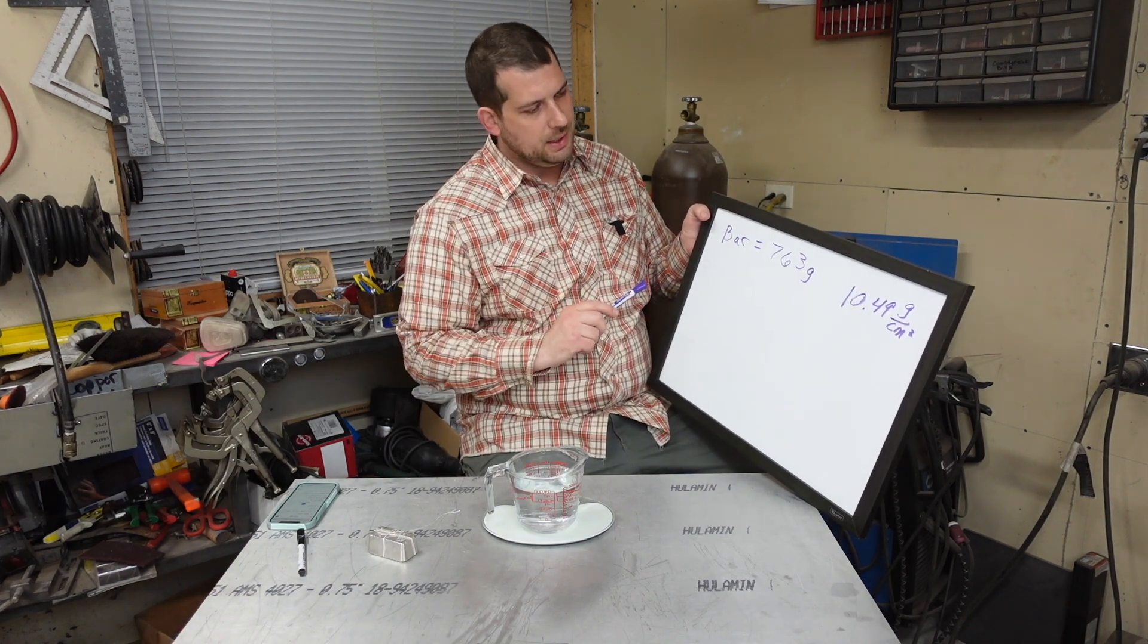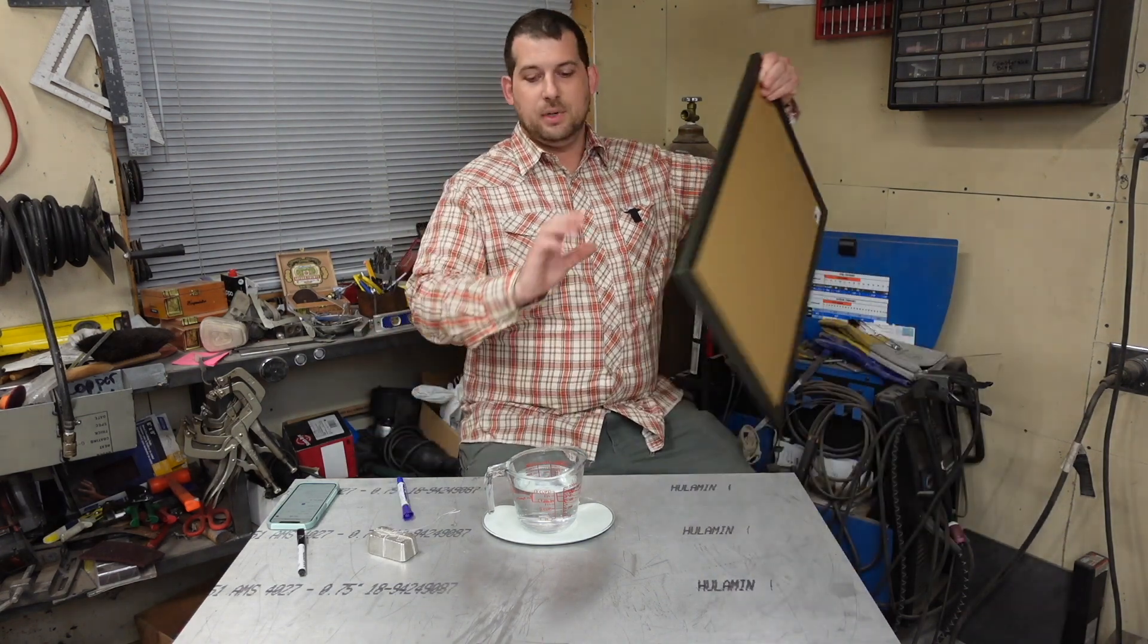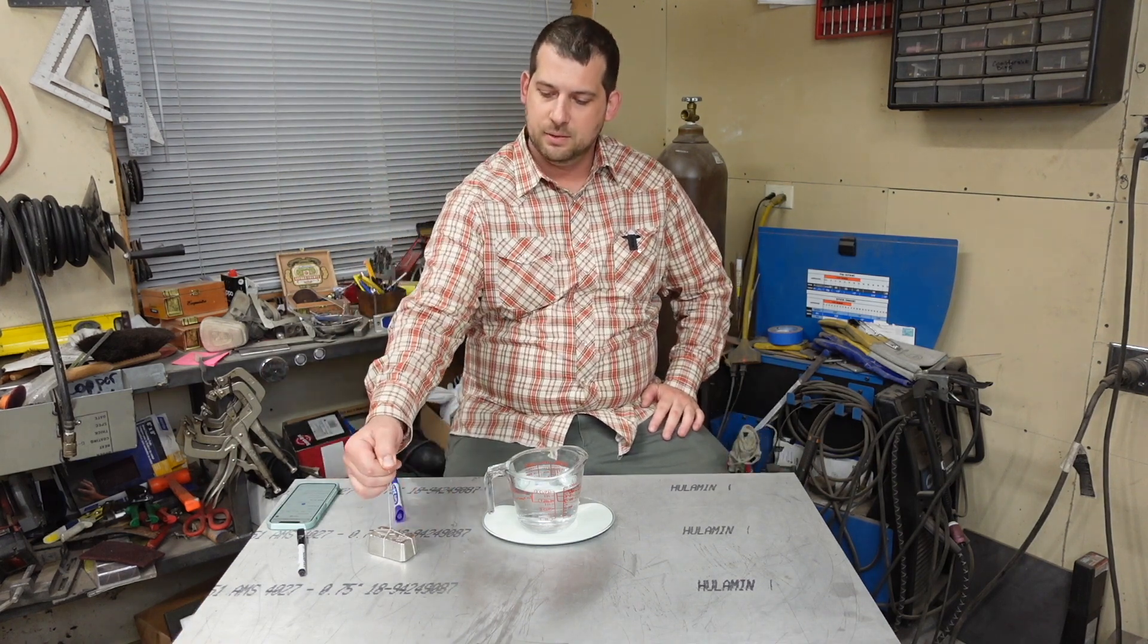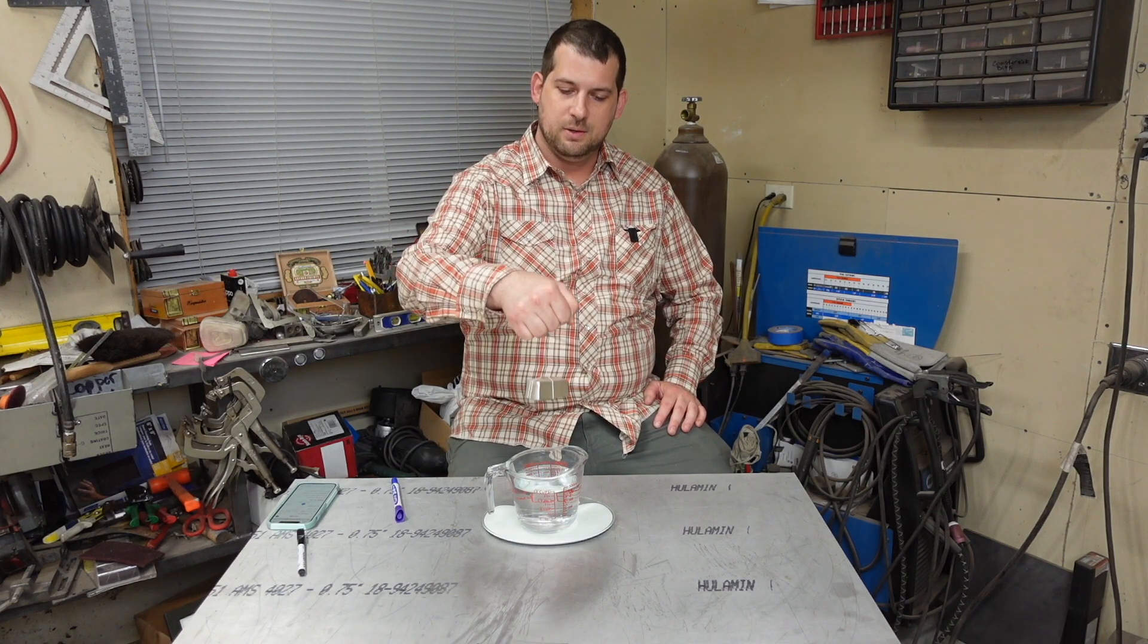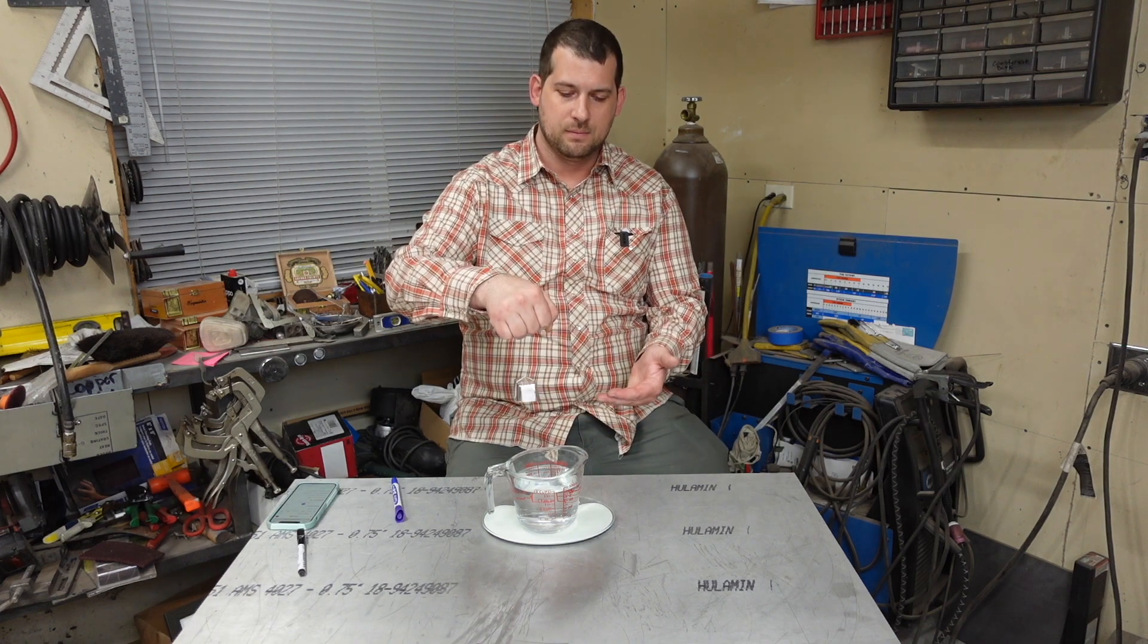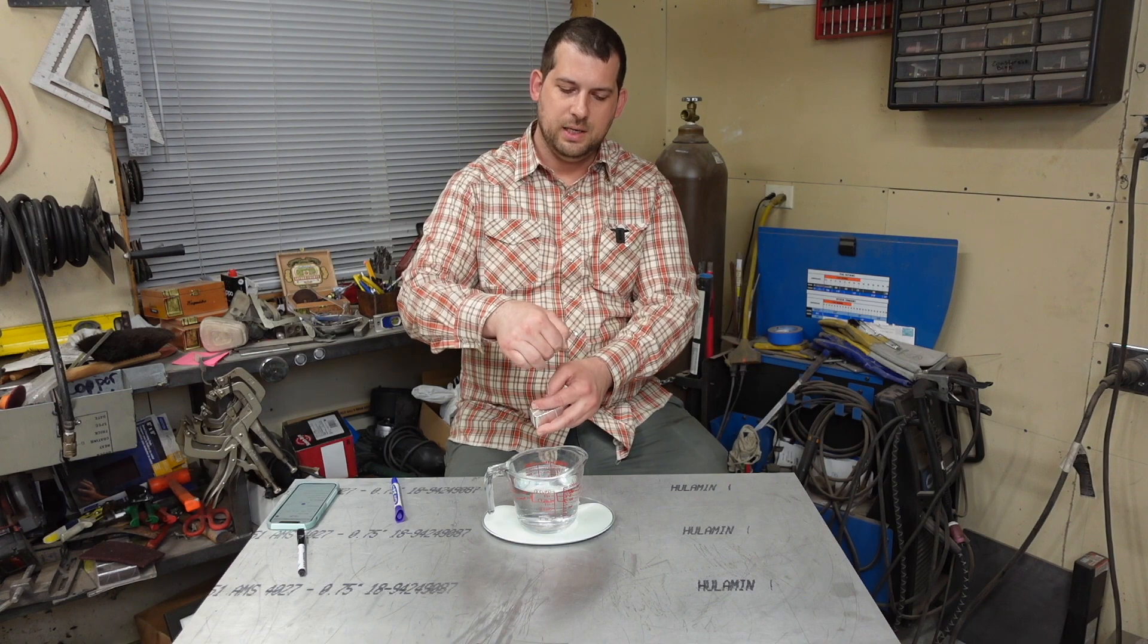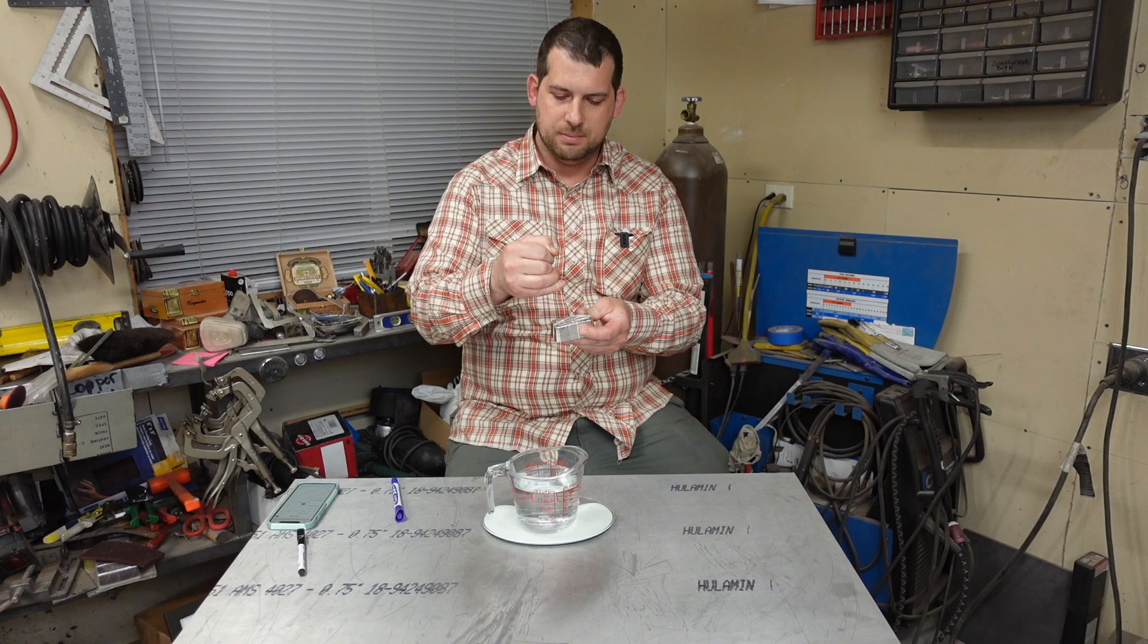So to do that, we know the grams of the bar, and so we need to find how many centimeters cubed this is. And luckily for us, our buddy Archimedes figured out that when you submerge an object heavier than water in water, there's a buoyancy force, and the buoyancy force is equal to the amount of water displaced by the object.